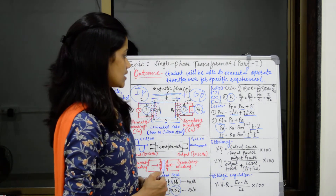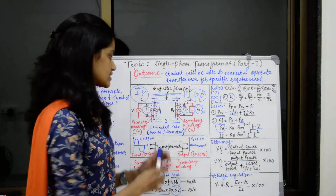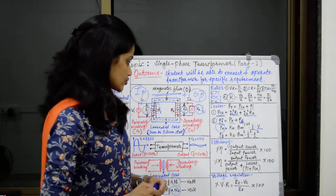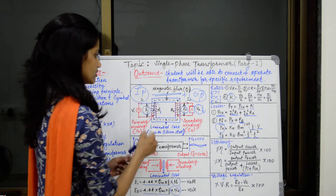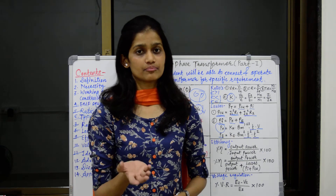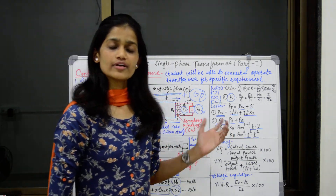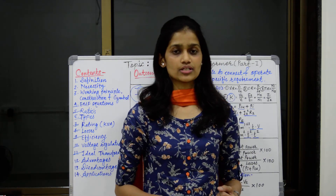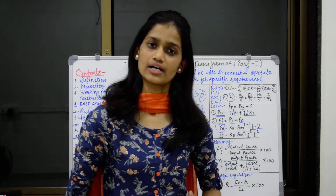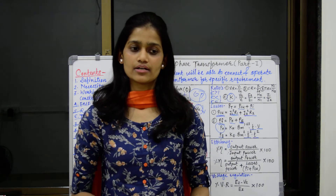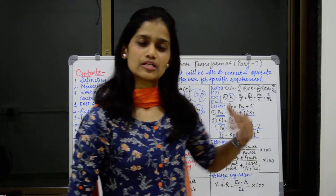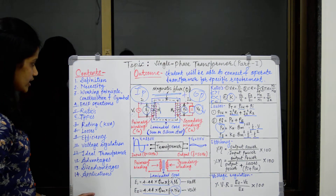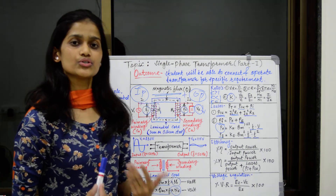Along with advantages, there are some disadvantages. First, its size is really big. Second, efficiency is not always 100% — losses are present. Third, voltage regulation is poor. Also, we require two windings, so more copper is required, which means copper losses are always more. As for applications: we can use this transformer in a substation as a distribution transformer, at the generating station as a power transformer, in welding applications, and in various DC power supplies to step up or step down voltage. So from this topic, we have learned everything from what a transformer is to where it is used. Thank you.